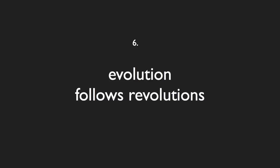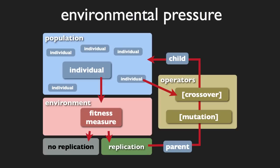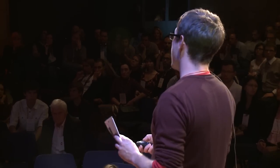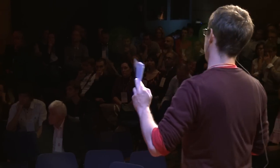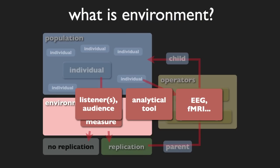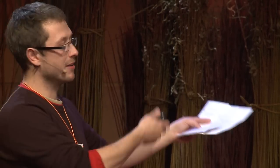The heart of the algorithm is the fitness measure module. This is the crucial point because the life-or-death decision is made here. So the next lesson is that the environment is at least a co-author of the artwork. This may bother some of you, especially if you are artists. But what indeed is the environment here? It can be a listener, the audience in general, or an analytical tool. We can try to formalize our taste or the taste of the population and compose people-shaped music, or get some popular appeal and compose hits — hundreds of hits per minute.